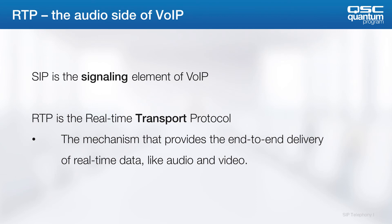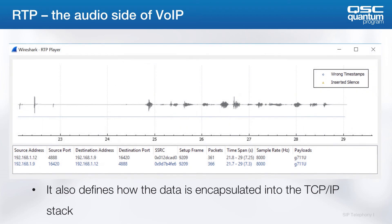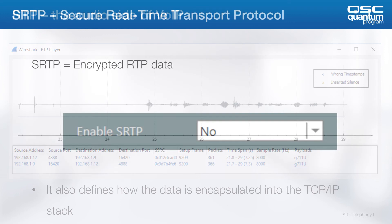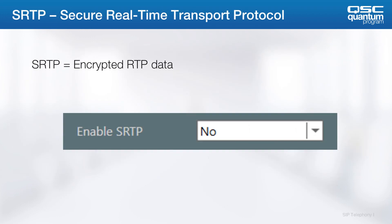As you recall, SIP is the signaling element but RTP is the actual voice — the transfer of the media. RTP doesn't just include audio; it can also be video and other real-time data. If you do a network capture, a PCAP within a Q-SYS core or a network capture on a PC, you can capture the audio and play it back on your PC. Sometimes customers are going to complain about choppy audio or missing audio, so you can use this capture to diagnose the issue. You can also encrypt the RTP traffic by turning on SRTP.